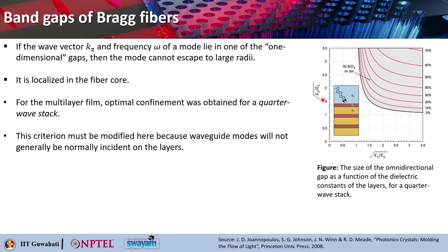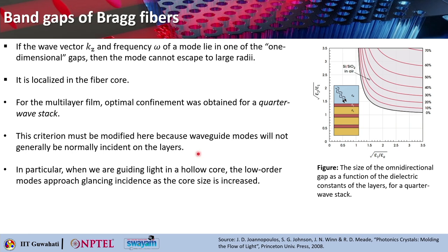Here one did not require omnidirectional mirrors to obtain localized modes because the mode's rotational symmetry would impose restrictions on the angle that can escape into large radii. With this understanding, the comparison with the multilayer film shows that optical confinement was obtained for the quarter wave stack, and this criteria must be modified in the case of Bragg fiber because waveguide modes will not generally be normally incident on the layers.